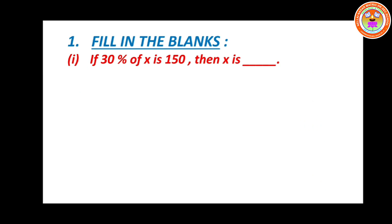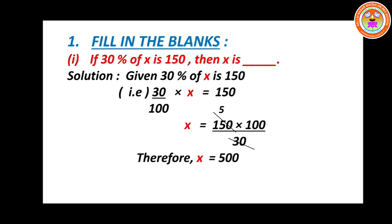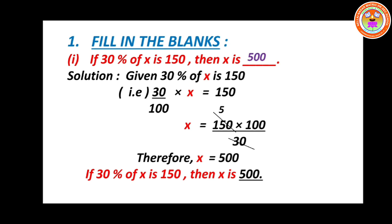30% of x means 30 divided by 100 into x equals 150. So x equals 150 into 100 divided by 30. Simplifying: 150 and 30 cancel — 30 into 5 equals 150 — so 5 into 100 equals 500. Therefore x equals 500. If 30% of x is 150, then x is 500.